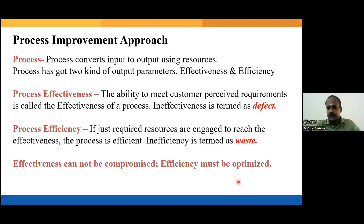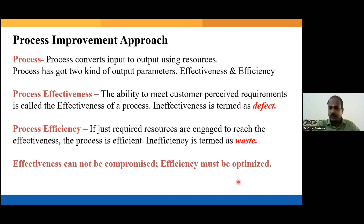Eliminating waste is called the Lean approach. Lean is all about improving efficiency — eliminating wasteful activities. Six Sigma, on the other hand, is all about improving effectiveness.